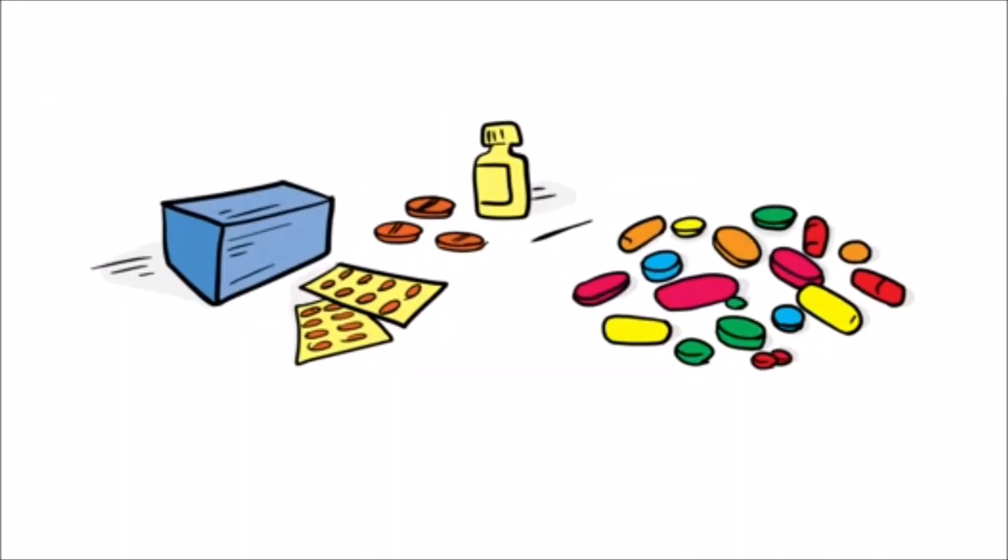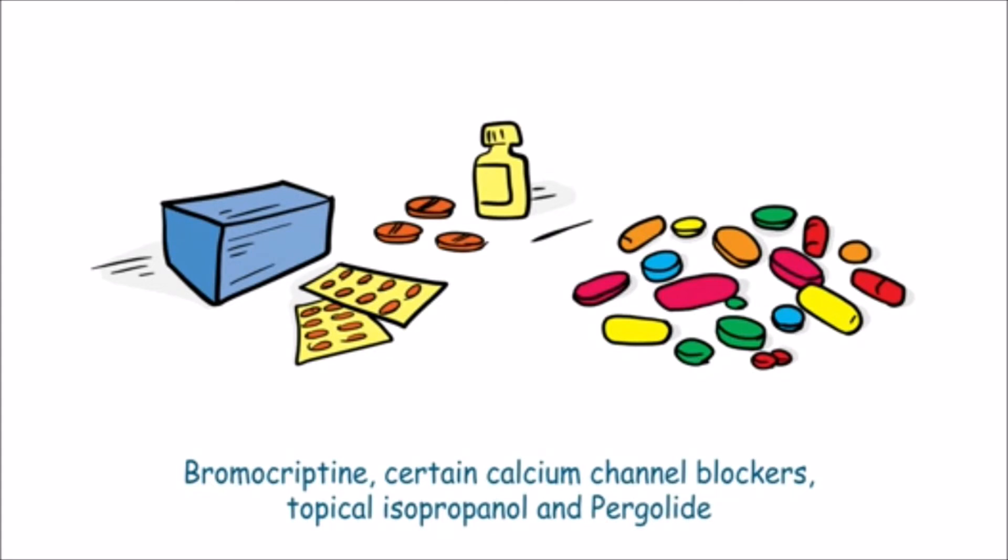Certain medications such as bromocriptine, certain calcium channel blockers, topical isopropanol, and pergolide can also trigger secondary erythromelalgia.